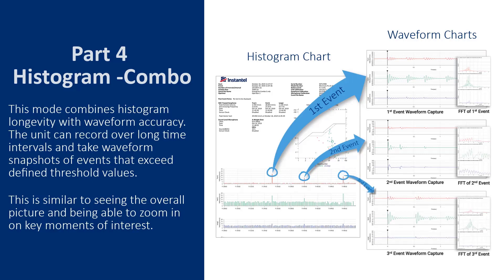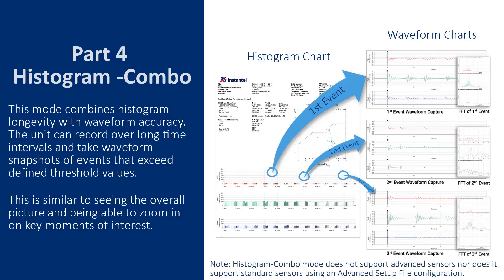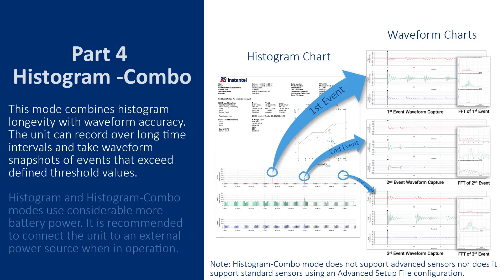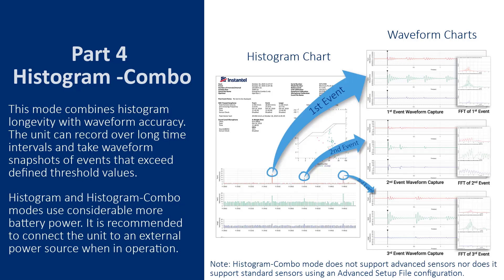This is similar to seeing the overall picture and being able to zoom in on key moments of interest. Histogram and Histogram Combo modes use considerably more battery power. It is recommended to connect the unit to an external power source when in operation.